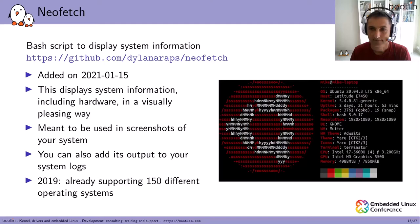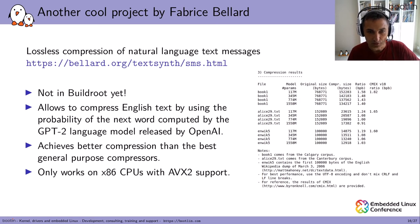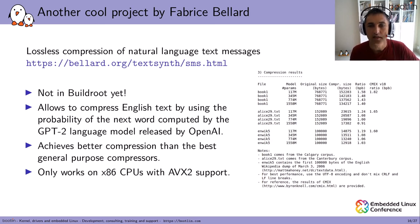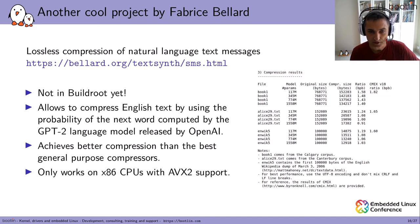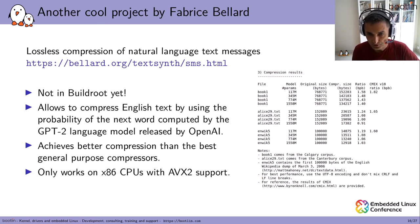Another cool project by Fabrice Bellard that I discovered on bellard.org — it's not in Buildroot yet and its name is a bit vague. It's a technique that allows compressing English or natural language text using the probability of the next word computed by the GPT-2 language model released by OpenAI. This actually achieves better compression than the best general purpose compressors, though it only works on x86 CPUs with AVX2 support.